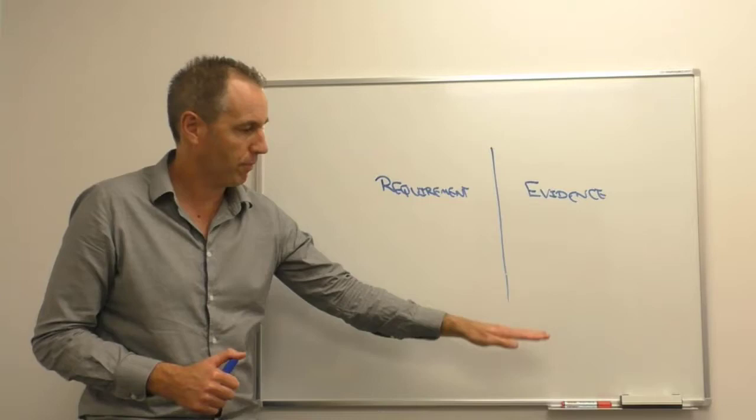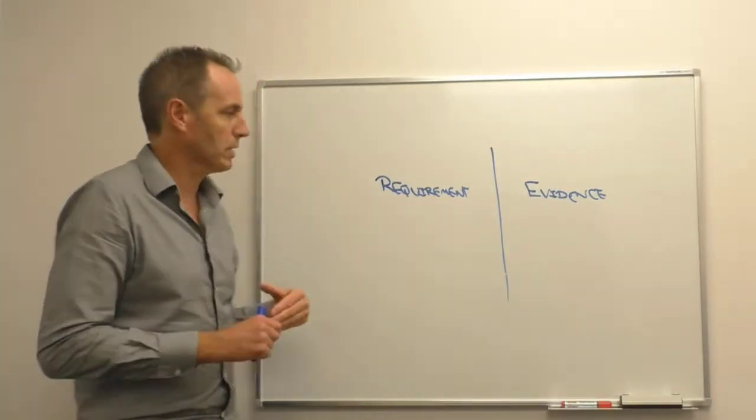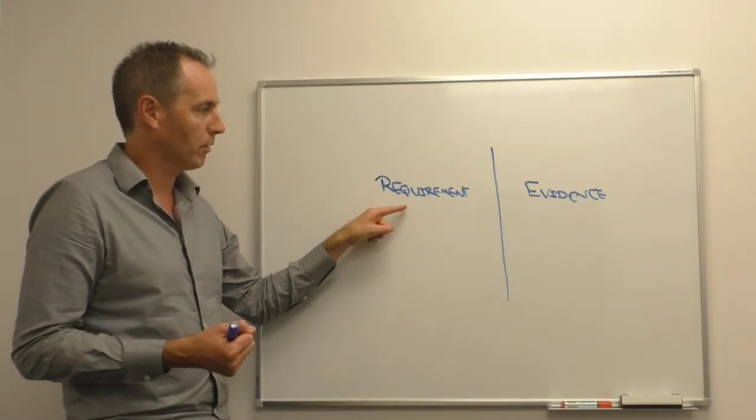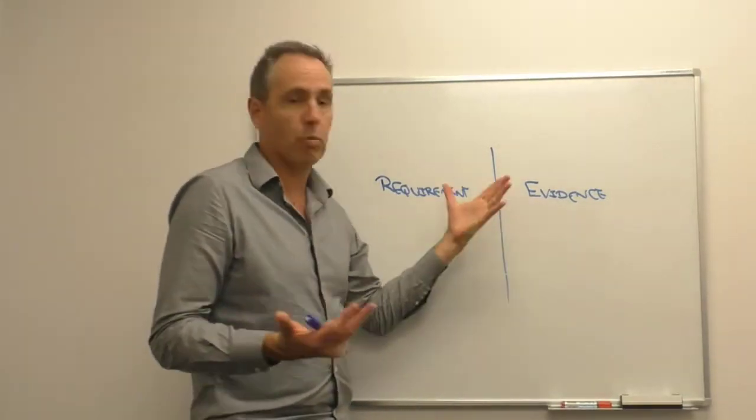If we're getting any further than that, if we've written two pages, the risk is the auditees will look at it and go, hang on, I'm not quite sure what we haven't conformed with, or even I'm not sure what the evidence is.